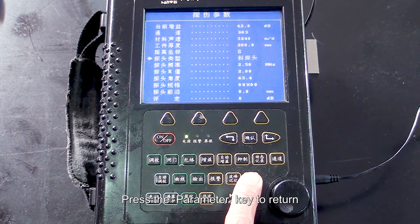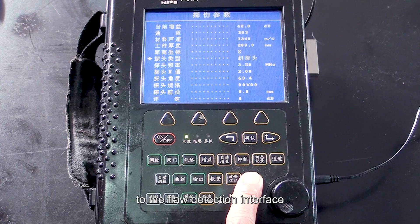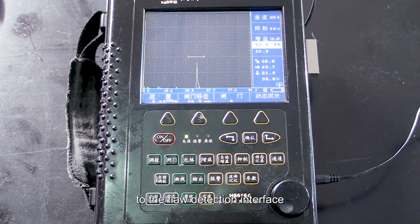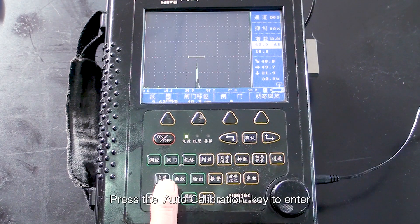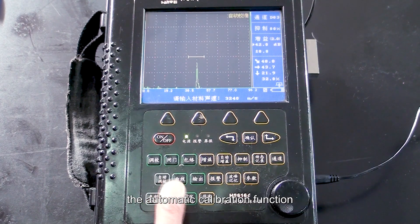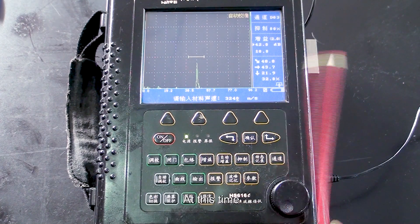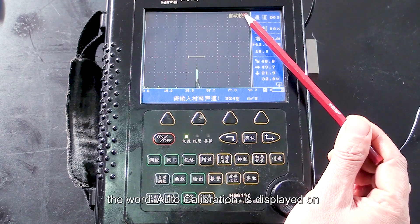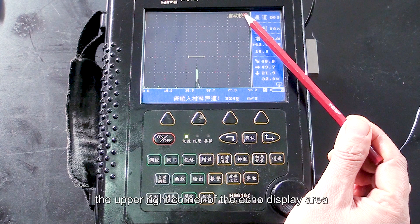Press the parameter key to return to the flow detection interface. Press the auto-calibration key to enter the automatic calibration function. At this time, the word auto-calibration is displayed on the upper right corner of the echo display area.